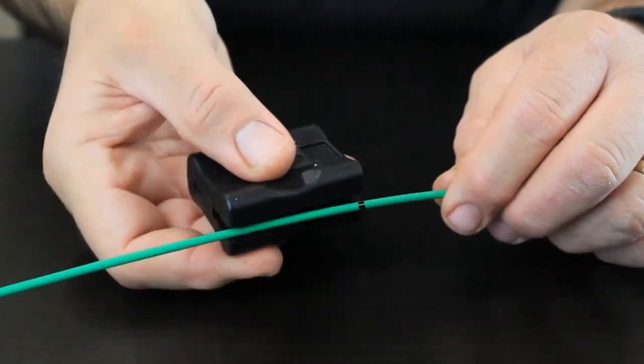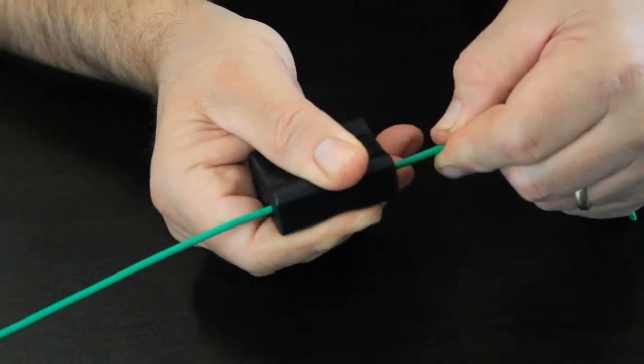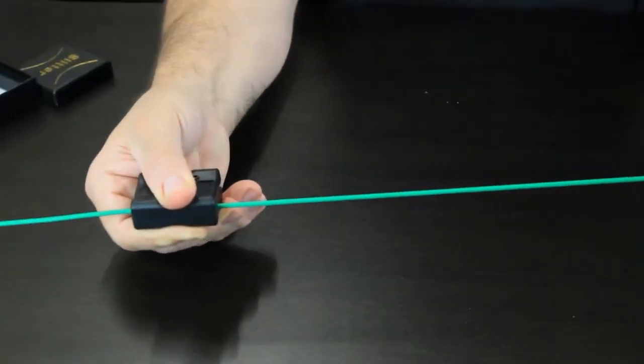The technician inserts the cable into the appropriate sized groove. In this case, we are making a mid-span slit using a 3 millimeter cable.